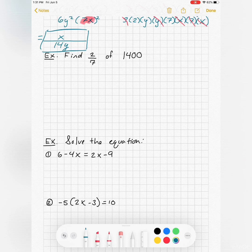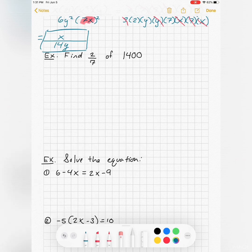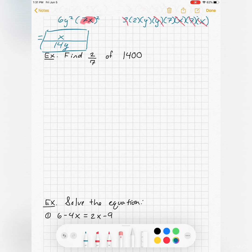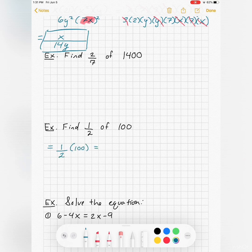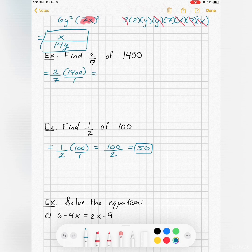Here's something a little different. Find two sevenths of 1400. Actually this is really easy, but I can even start out with an easier one here just to show you. Find a half of a hundred. Well, how do you do that? You just take the half and you multiply it by the hundred. Half of a hundred is fifty. So to find two sevenths of 1400, you're just multiplying the two together. 1400 is 1400 over one.